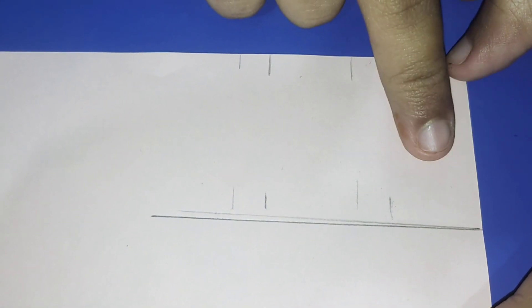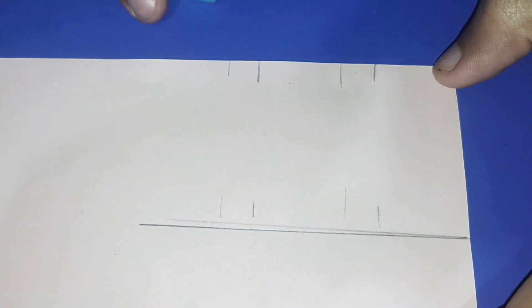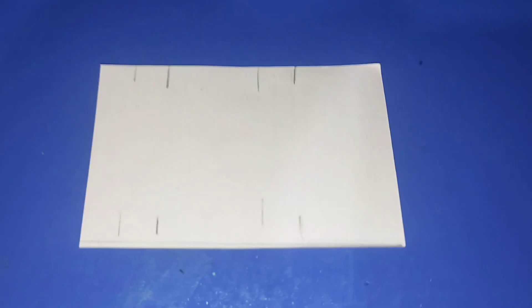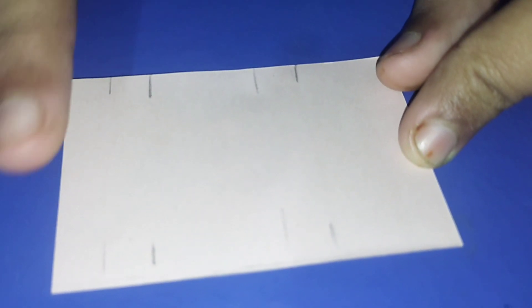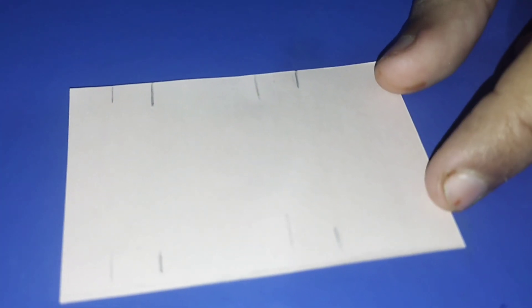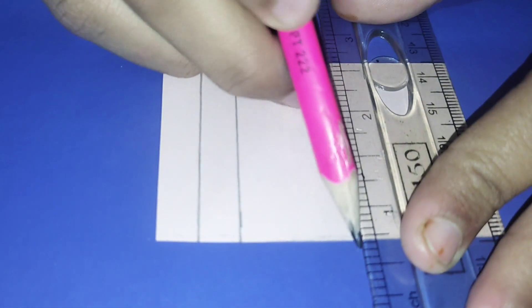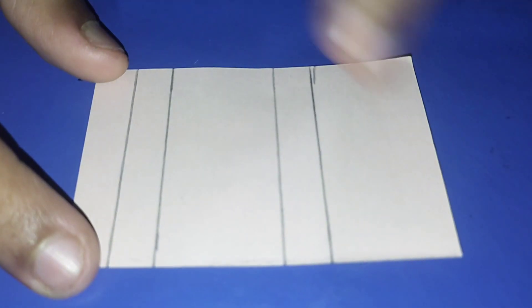So friends, here I marked the length of the eraser and now I will cut it according to this line. Cut the little part along the lines we have drawn before, and then we will fold it.